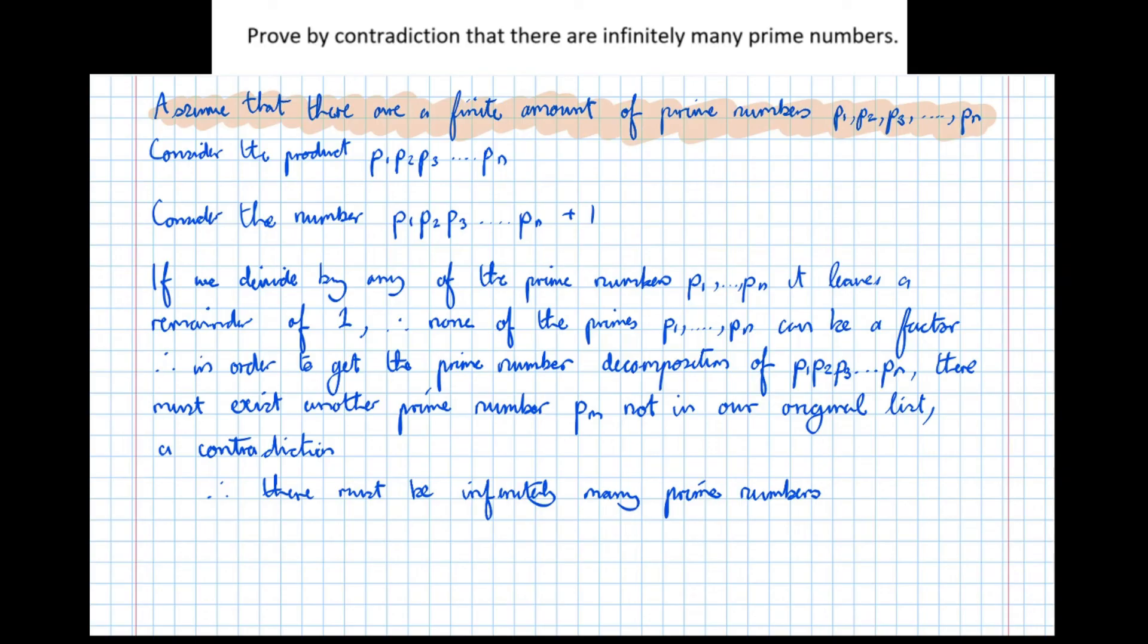So it asks us to prove by contradiction that there's infinitely many prime numbers. We're now assuming that the opposite or the negation of that is true. So we're assuming that there's a finite amount of prime numbers, and then what we're trying to do is prove it wrong.